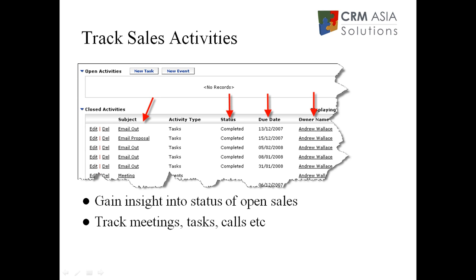The CRM can also be used to track sales activities. This example shows specific activities along with the status and the due date. These will help you gain insight into the status of your open sales and help you track what the sales team are actually doing with regards to meetings, calls and so on.